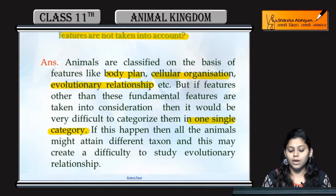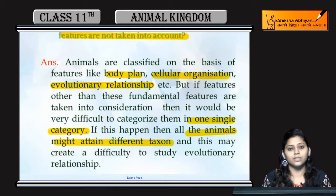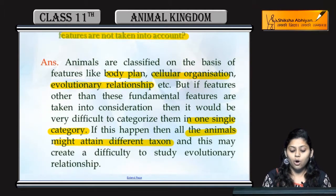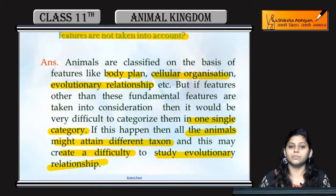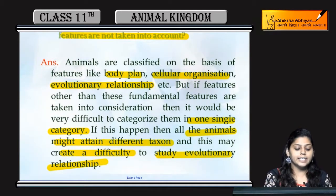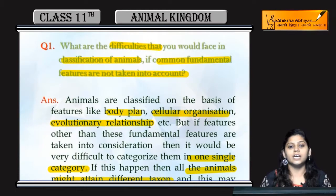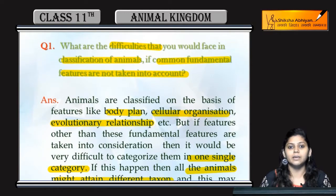इसकी वजह से क्या होगा — animals might attain different taxons, अलग taxons में उनको रखा जाएगा, और इससे difficulty होगी to study evolutionary relationships। इसलिए fundamental features के अलावा हम कोई और features को consider नहीं करते हैं — अगर करेंगे, तो हम उनकी evolutionary studies नहीं कर पाएंगे।